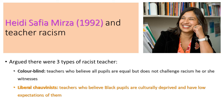Next, the liberal chauvinists - these are teachers who believe black pupils are culturally deprived and have low expectations of them. In a sense they are sympathizing rather than empathizing with black students; they look down upon them, feel sorry for them, and think it's not fair to expect them to achieve the same as white British majority pupils. This is still a form of racism because it involves prejudicial views and potentially discriminatory actions.